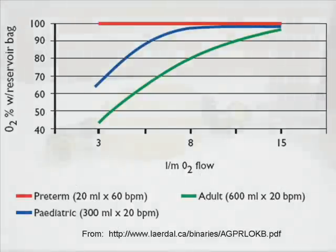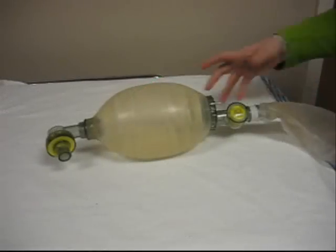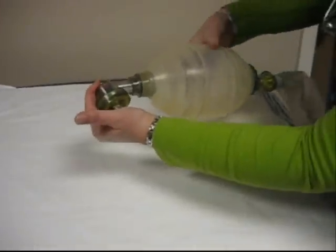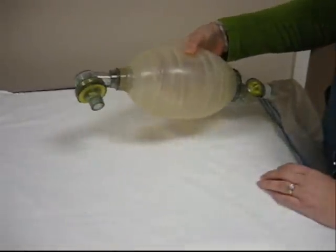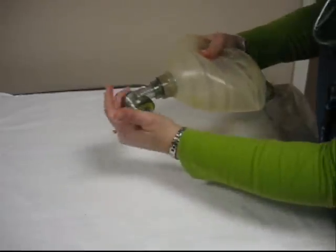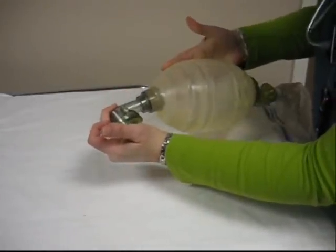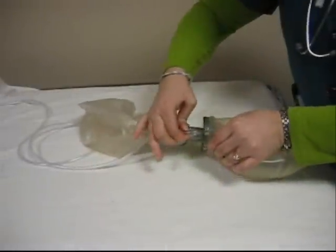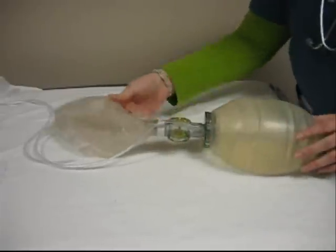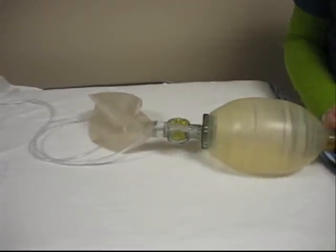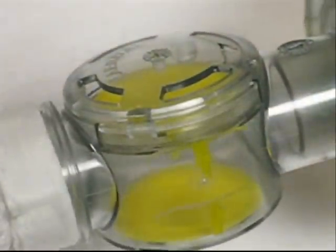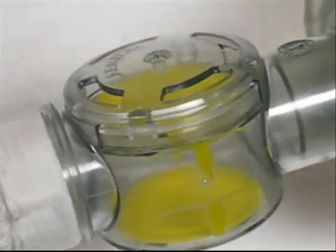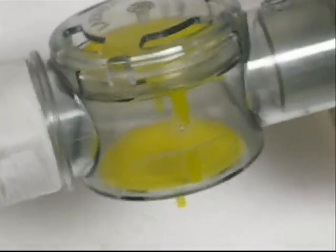The student challenging the CBO should be prepared to show a manual checkout procedure of this device. This includes, but is not limited to, a pressure test, oxygen filling of the reservoir, the O2 overflow, as well as the air inlet valves, and explaining all the valves being tested during the specific procedure.